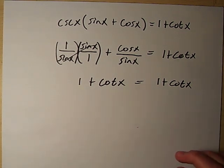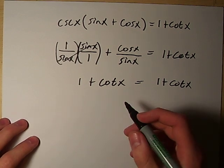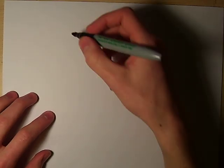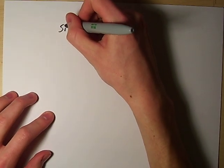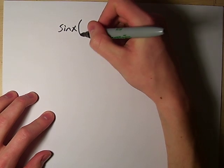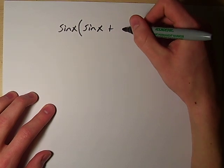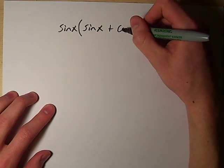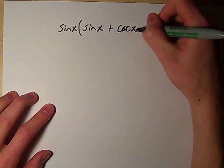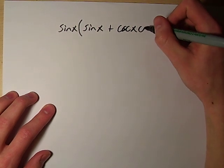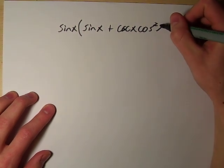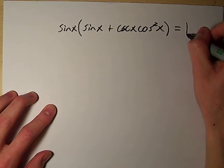So let's have a look at another one, one that's maybe a little bit more difficult looking. Like here you have sine x multiplied by sine x plus cosecant x cosine squared x equals 1.